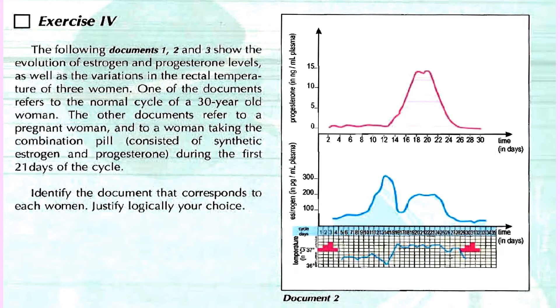Done. This is the end of the exercise. We have another exercise, exercise four. It's a good application for documents one. As you can see, the following documents one, two, and three show the evolution of estrogen and progesterone levels as well as the variations in the rectal temperature. I'm looking at estrogen, progesterone in the female, and the temperature at the same time. One of the documents refers to the normal cycle of a 30-year-old woman. The other documents refer to a pregnant woman and to a woman taking the combination pill, consisted of synthetic estrogen and progesterone during the first 21 days of the cycle.